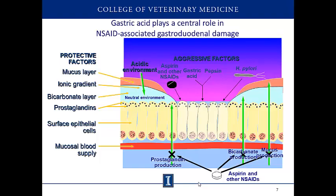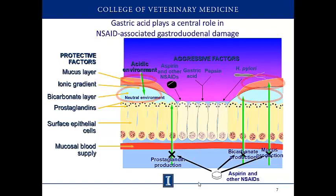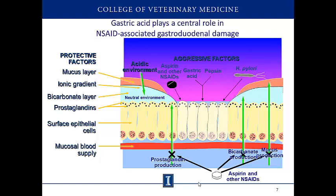Without that protective layer, cells are exposed to the acid. Aspirin and some other non-steroidals block prostaglandin production and also prevent bicarbonate and mucus layer production. We should also note that you don't want to combine non-steroidals with glucocorticoids, because glucocorticoids increase the production of gastric acid and pepsin, further increasing the risk of developing gastric ulcers.